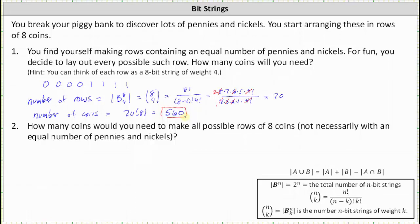Number two, how many coins would you need to make all possible rows of eight, not necessarily with an equal number of pennies and nickels? So again, each row is going to have eight coins.